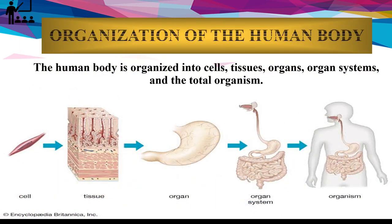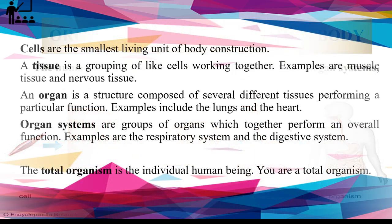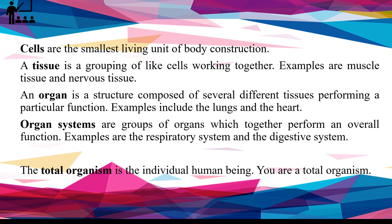Organization of the human body: The human body is organized into cells, tissues, organs, organ systems, and the total organism. Cells are the smallest living unit of body construction. A tissue is a grouping of like cells working together — examples are muscle tissue and nervous tissue. An organ is a structure composed of several different tissues performing a particular function — examples include the lungs and the heart. The total organism is the individual human being.